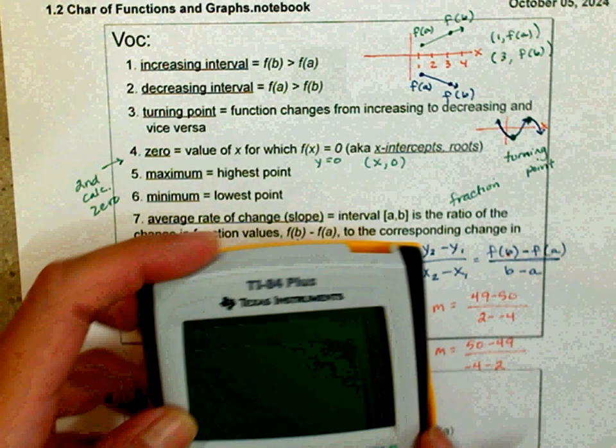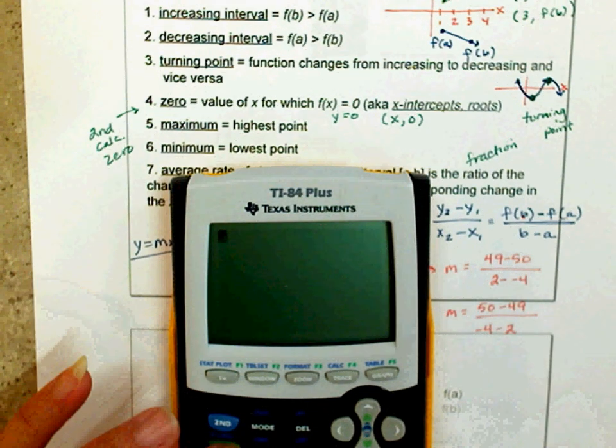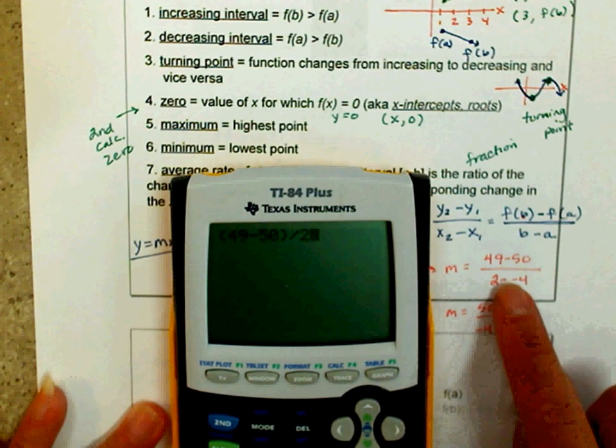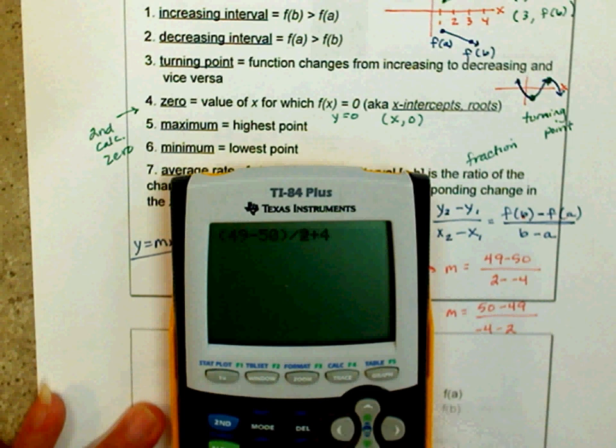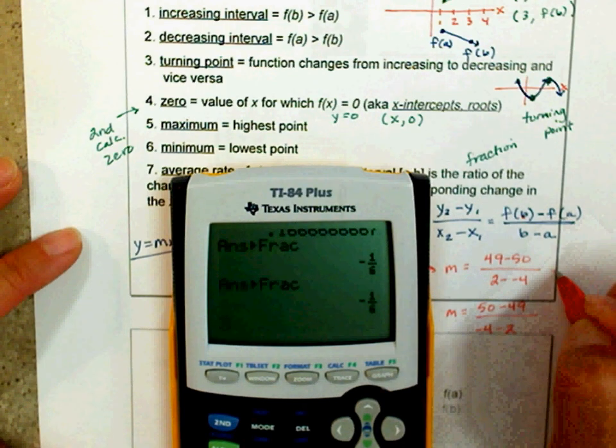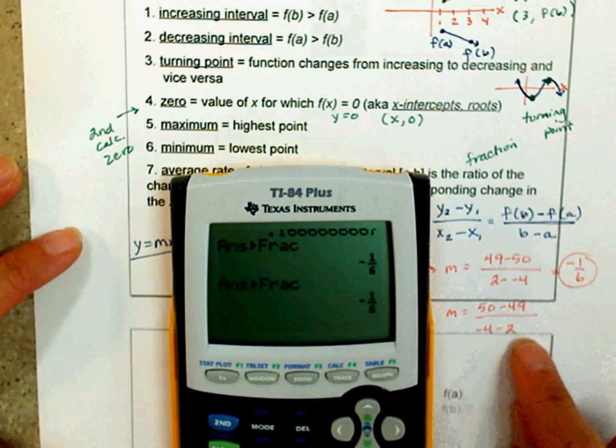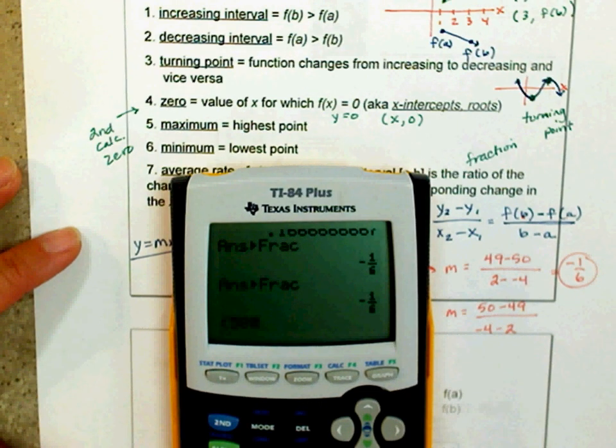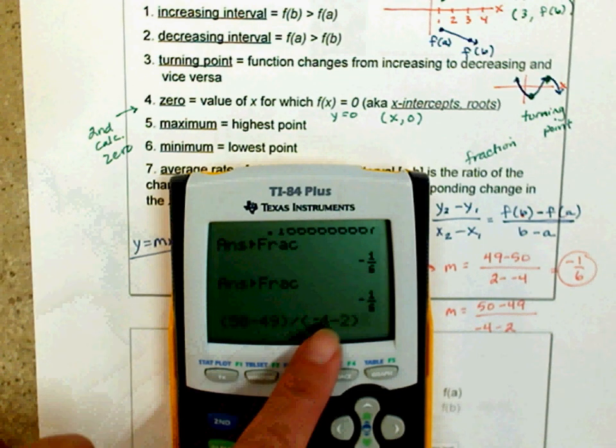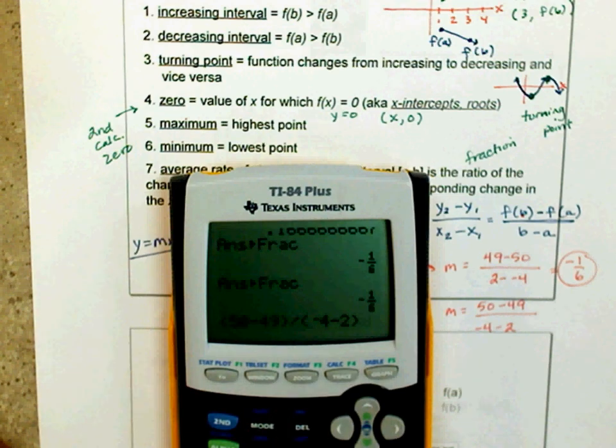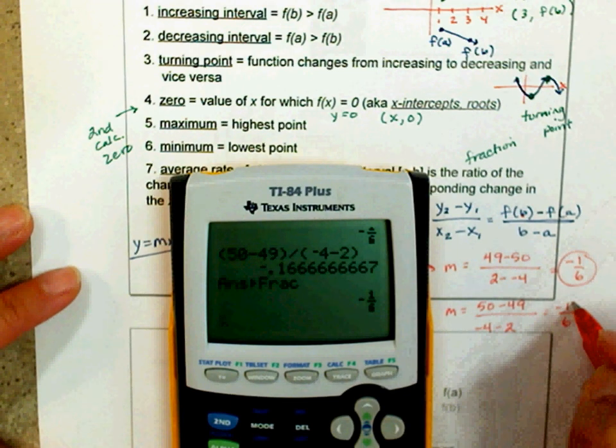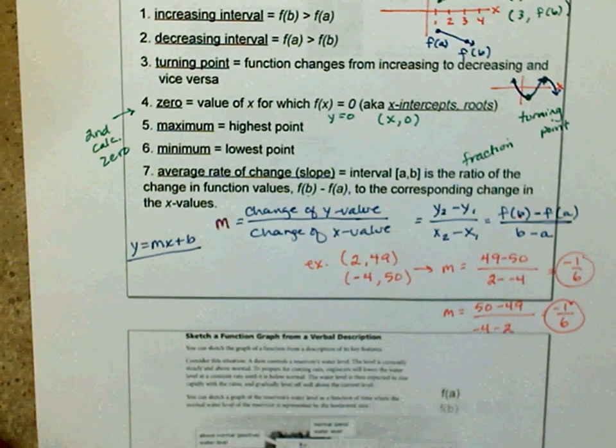Or if you want to make this one your y2, this would be 50 minus 49 divided by negative 4 minus 2. Either way, you're going to get the same solution. The same numerical answer. So it's a change of y over a change of x. I'm going to put parentheses around it because that's a grouping. 49 minus 50 divided by 2. A negative negative becomes a positive. 2 plus 4. And let's change this to a fraction, which is negative 1 over 6. Let's see if we switched it around. 50 minus 49 divided by negative 4 minus 2. Notice the negative is shorter than the subtraction. Do you see how you have the same solution?